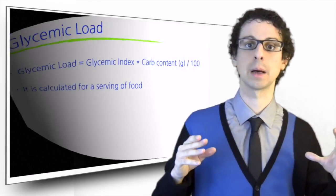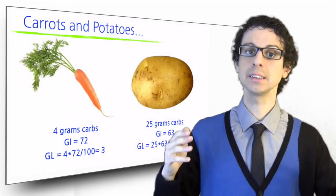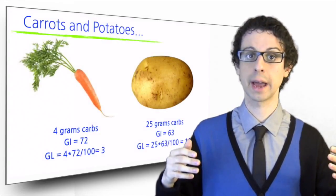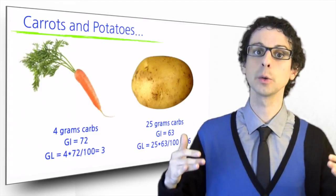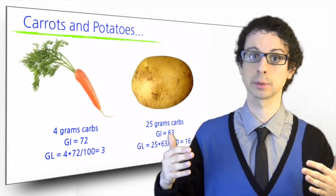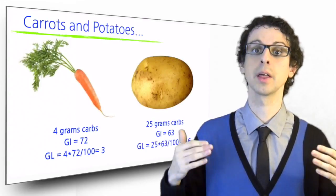Let's go back to our previous example, and let's consider the glycemic index of 72 for carrots and of 63 for boiled potatoes. The glycemic load of our carrot would be 72 times 4 grams of carbs divided by 100, which is 3.